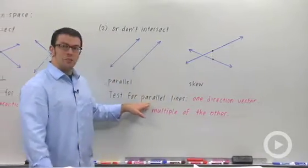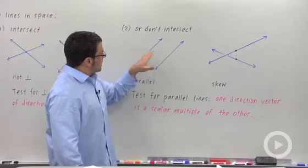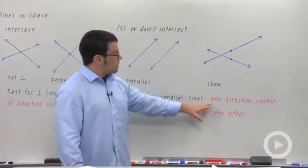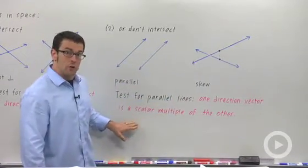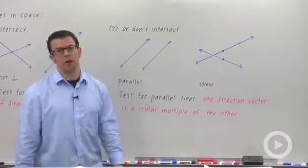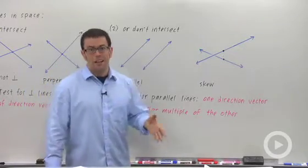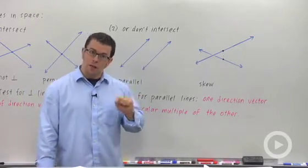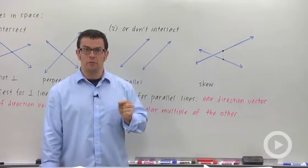How do you tell if lines are parallel? Well if you take their two direction vectors, one direction vector will be a scalar multiple of the other. That shows that they're parallel. But beware, they could be the same line so make sure that they're not the same line if you're testing for parallel lines.